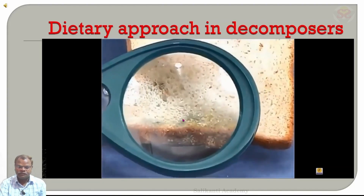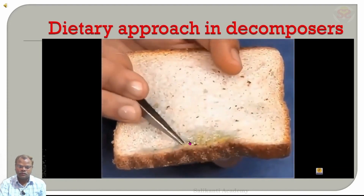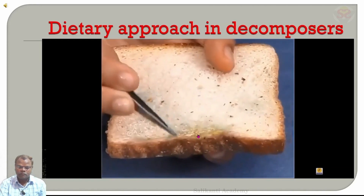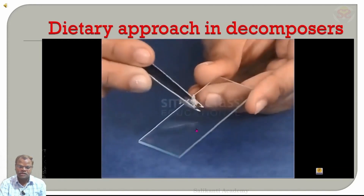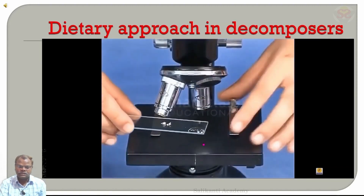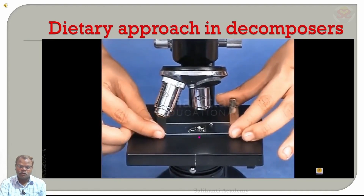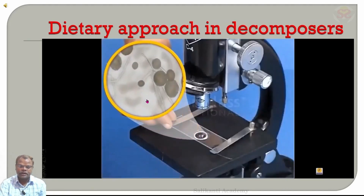By observing with a magnifying glass, you can clearly observe them. Take some black pieces from the bread slice, put them on a slide with forceps, and keep the slide on the stage of the microscope. By observing this slide with the microscope, you can clearly see round, spore-like structures. These are the bread mold.